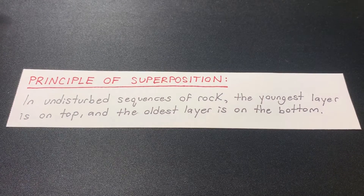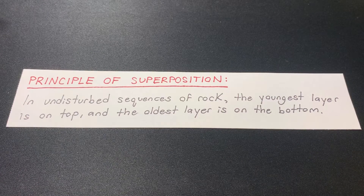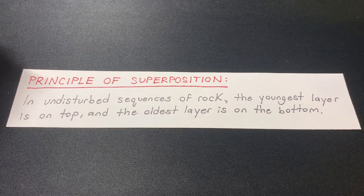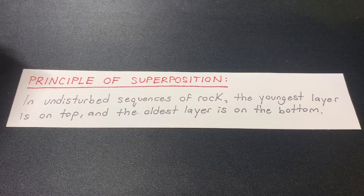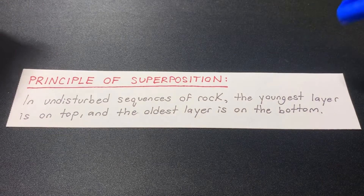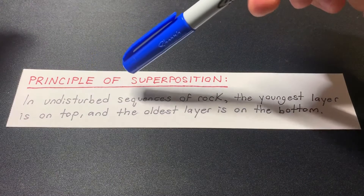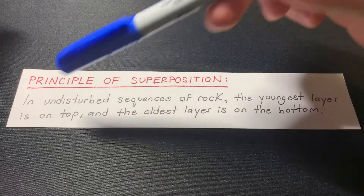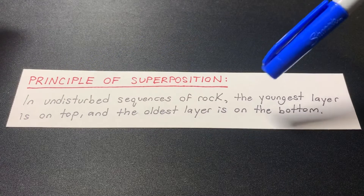Hello, what is going on everybody? Today I will be showing you guys the principle of superposition. This is a very easy principle to understand in terms of geology, and there are four other ones, so five in total. Basically, what the principle of superposition says is that in undisturbed sequences of rock, the youngest layer is on top and the oldest layer is on the bottom.